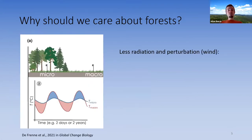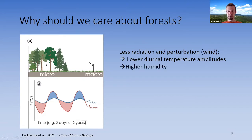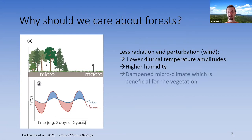From the global scale we go to the very local scale: forest microclimate. Within a forest, we have less radiation and perturbation by wind, and therefore lower diurnal temperature amplitudes. Seasonal temperature fluctuations are dampened in comparison to the macroclimate of an adjacent field or arable land. As a consequence, we also have higher humidity within the forest, which is beneficial for vegetation.